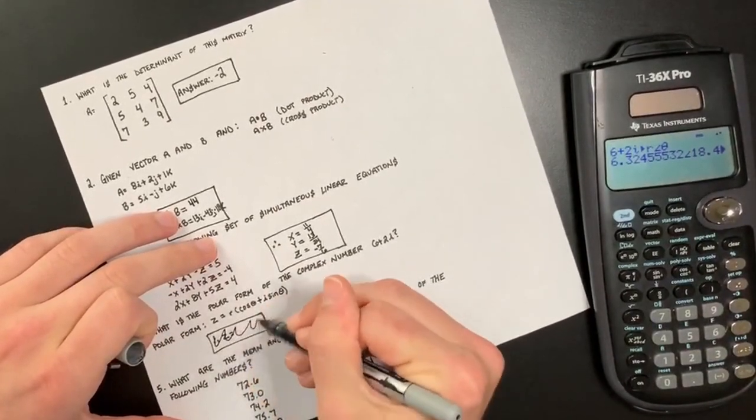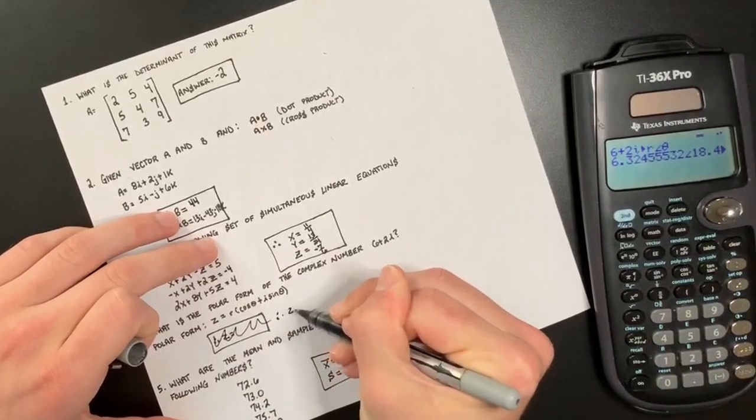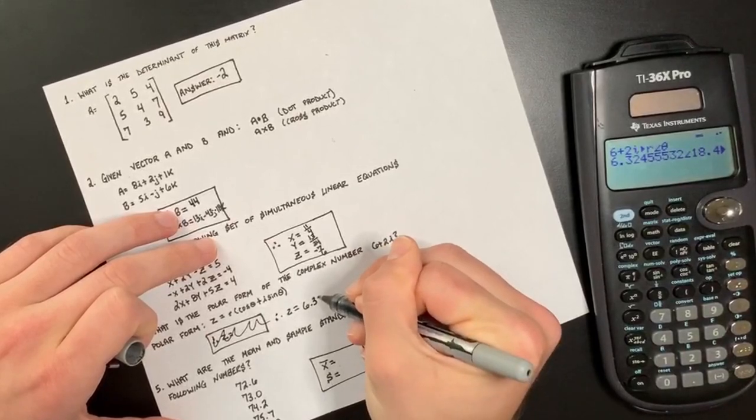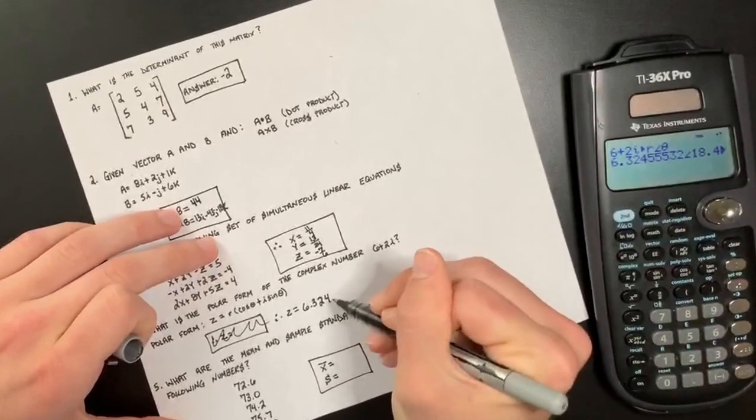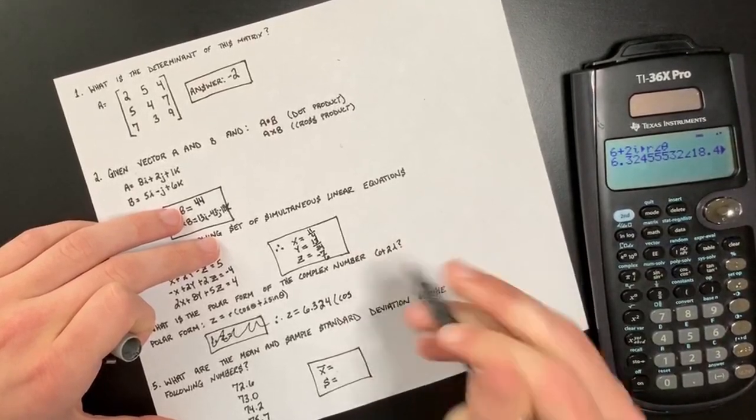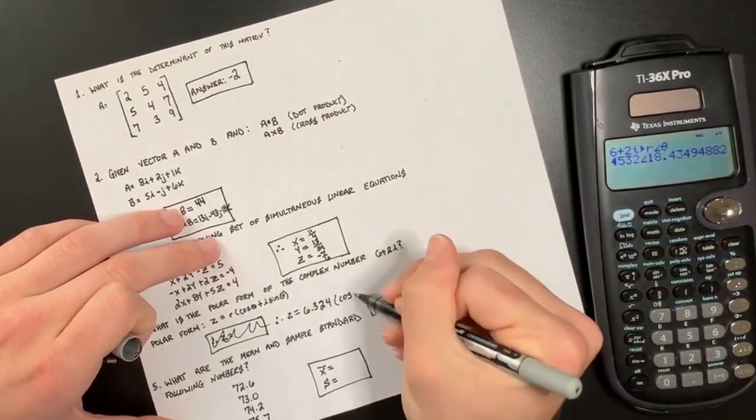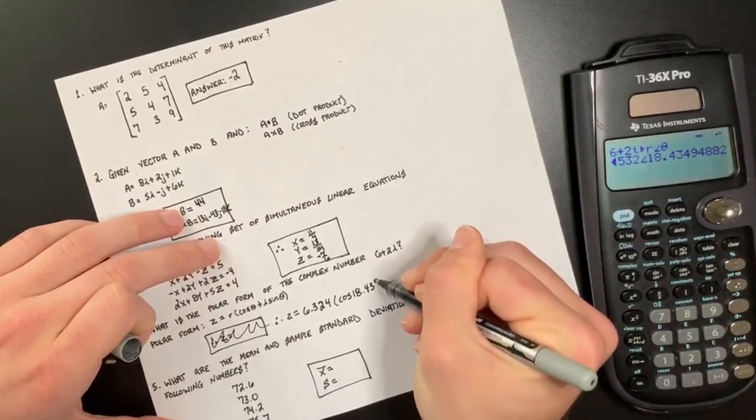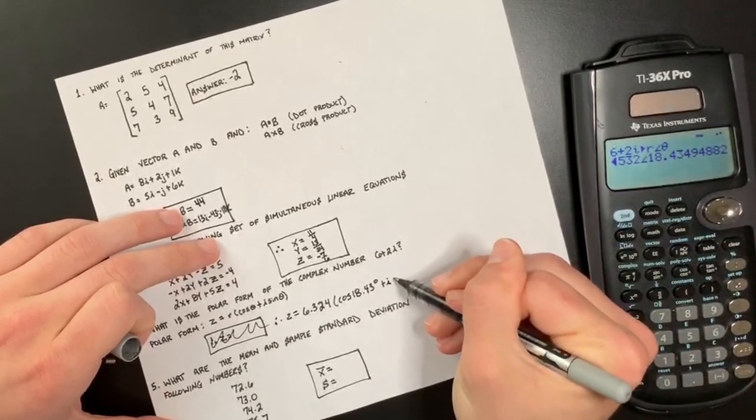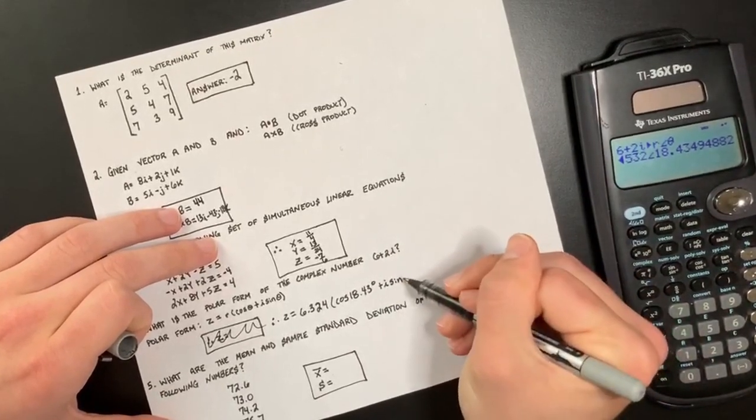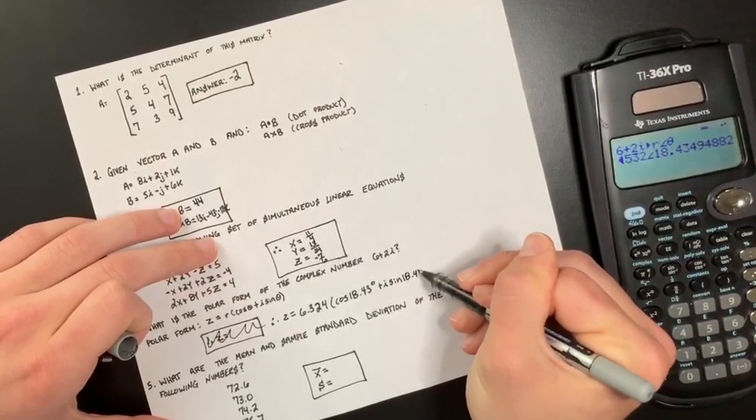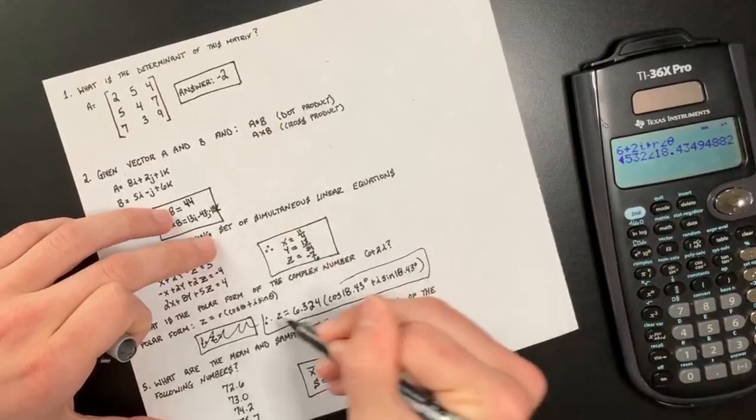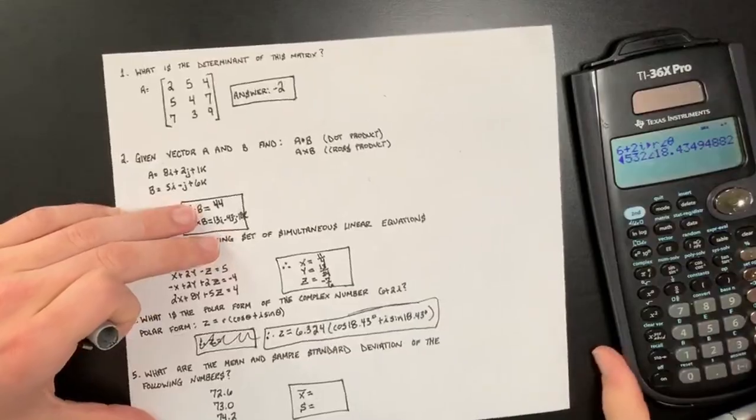So the answer for this question is z equals, I didn't give myself enough room, so let me just move this over a little bit. Therefore, z equals r, which is 6.324, and then cosine of theta, which you just scroll over, you do 18.43 degrees plus i sine of theta, which is the same theta, so 18.43 degrees. And that is your answer to convert the complex number into the polar form.